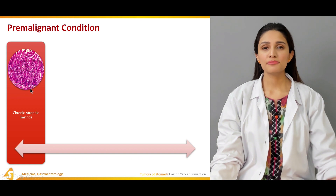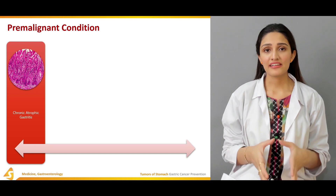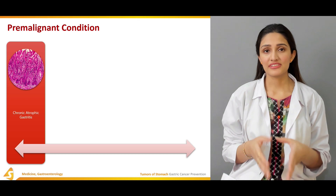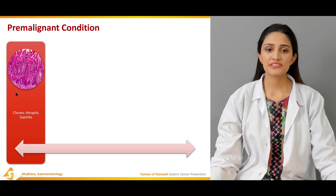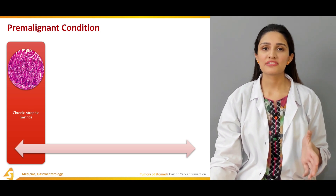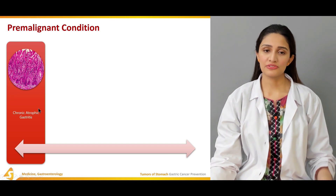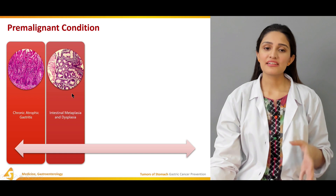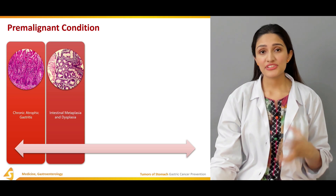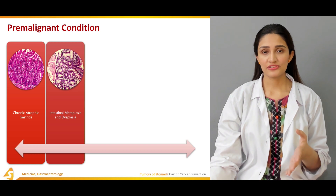Talking about pre-malignant conditions — conditions that can predispose to a malignancy, in this case gastric cancer. First is chronic atrophic gastritis, which can occur as a result of Helicobacter pylori infection causing chronic infection and then chronic atrophic gastritis. Second is intestinal metaplasia and dysplasia, which are changes within the epithelium of the stomach that predispose to a cancerous type.